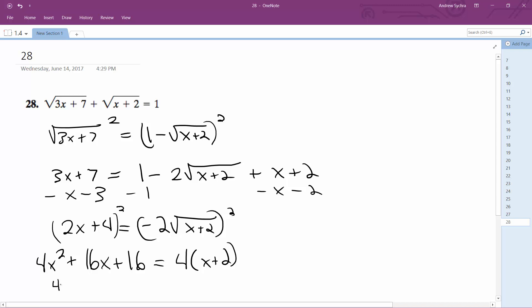So the 4s can cancel out. So we're left with x squared plus 4x plus 4 equals x plus 2, minus x minus 2.